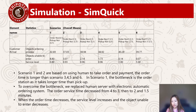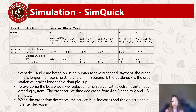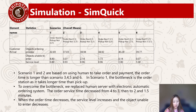Based on different service times of the two stations, we simulated six scenarios. Each scenario's order time is decreasing. In the first scenario, the average order time is 4 minutes with 1 minute standard deviation, and the average pickup time is 3 minutes with 1 minute standard deviation. Scenarios 1 and 2 are based on using a human to take orders, where order time is longer. In scenario 1, the bottleneck is the order station. To overcome the bottleneck, we replace the human server with an electronic automatic ordering system, decreasing order service time from 4 to 3, then to 2 and 1.5 minutes. When order time decreases, the service level increases and the objects unable to enter the process also decrease.